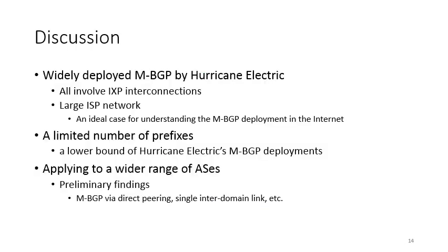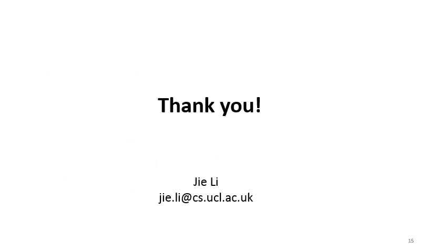In conclusion, our paper reports the widely deployed MBGP by Hurricane Electric. All identified MBGP cases involve IXP interconnections. Hurricane Electric is a large ISP network and proves to be an ideal case to understand MBGP deployment in the Internet. The results are based on queries to a limited number of prefixes, providing a lower bound of Hurricane Electric's MBGP deployment. We have been applying our method to a wider range of ASs, and preliminary findings show that MBGP can be deployed via direct peering or even on a single inter-domain link. Thank you for your attention; we are open to any questions and comments.